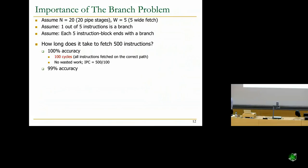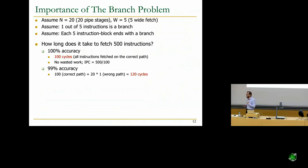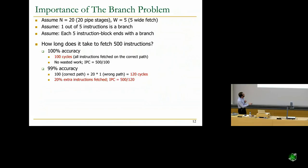What if we're just 99% accurate? We have 500 instructions, one in five is a branch, so 100 branches. If 99% accurate, only one is mispredicted. We pay the 20-cycle penalty once, spending 20 cycles on the wrong path. So it takes 120 cycles to finish, we fetched 20% extra instructions, and our IPC is 500 divided by 120 — reduced from 5.